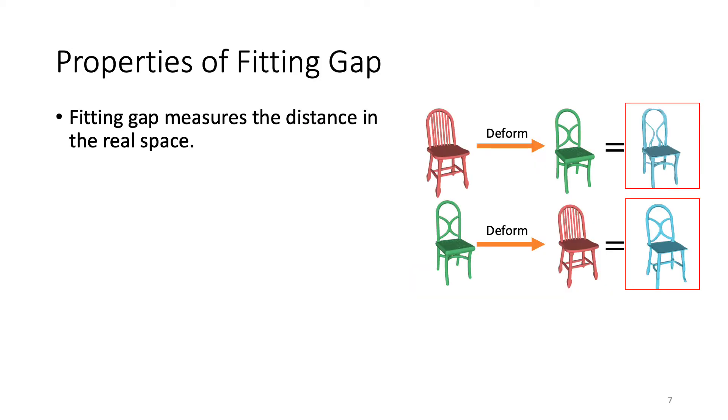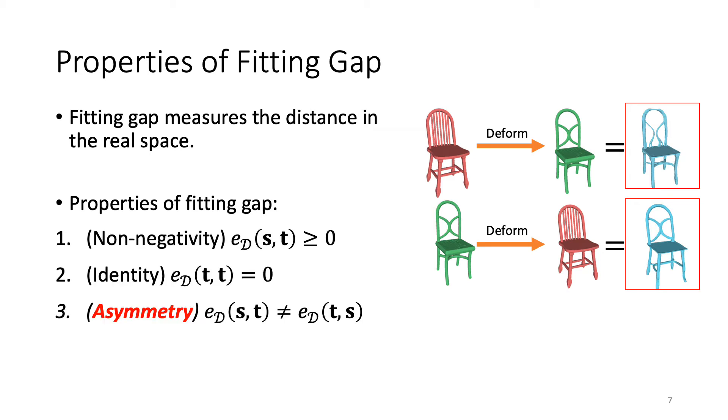In order to achieve the desired deformation-aware embedding, our goal is to learn a latent space where the distance reflects the fitting gaps between the shapes. Thus, the latent space has to satisfy the properties of the fitting gap, which are non-negativity, identity, and most importantly, asymmetry. As shown, the red chair can deform into the green chair, but not the other way around. This asymmetric property makes our problem not a typical metric learning setup.